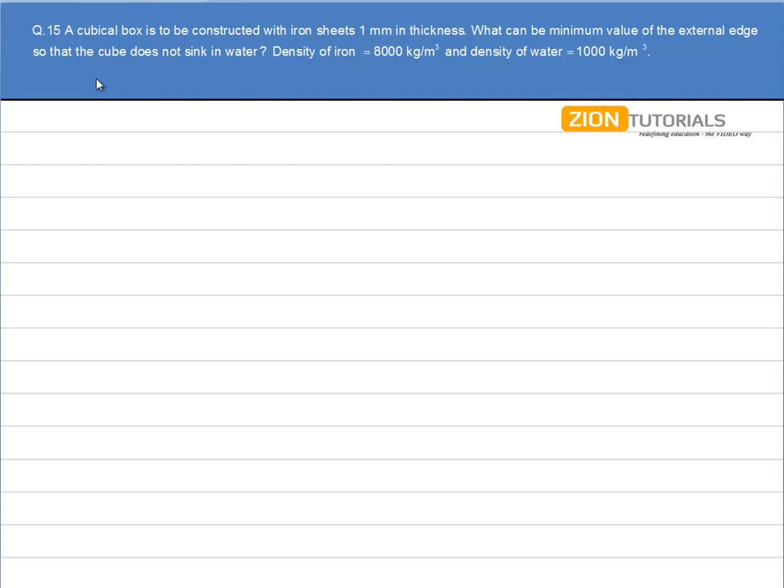A cubical box is to be constructed with iron sheets 1 mm in thickness. What can be the minimum value of the external edge so that the cube does not sink in water?